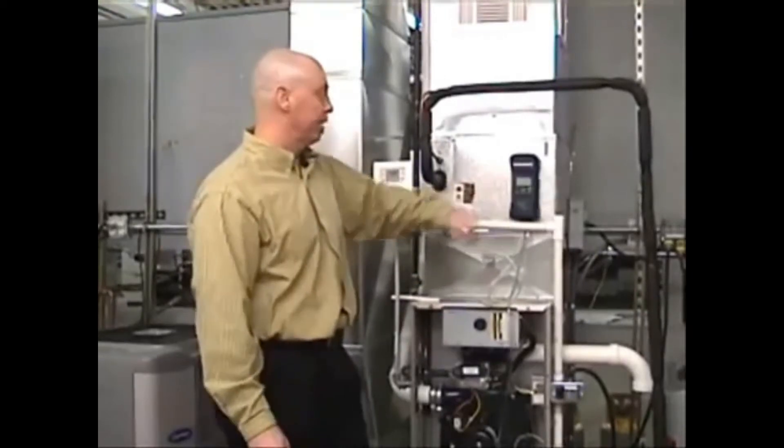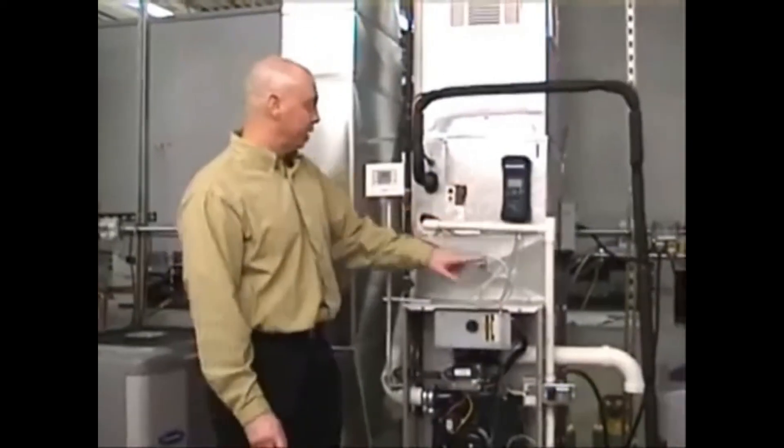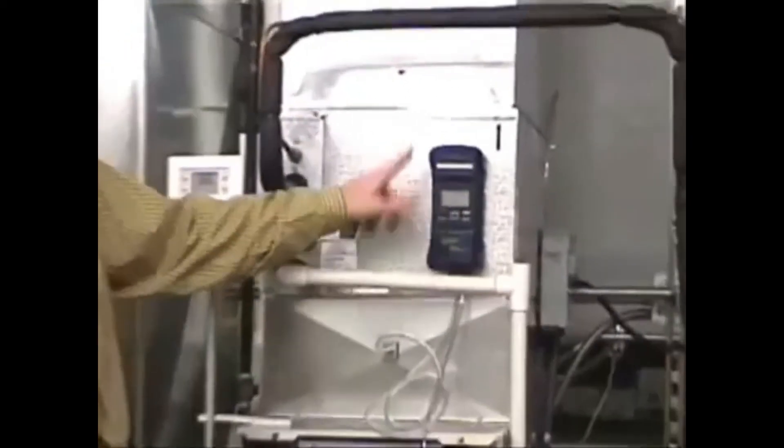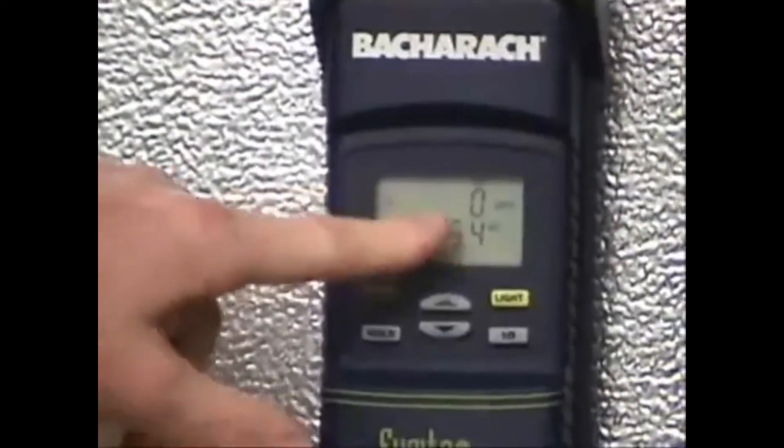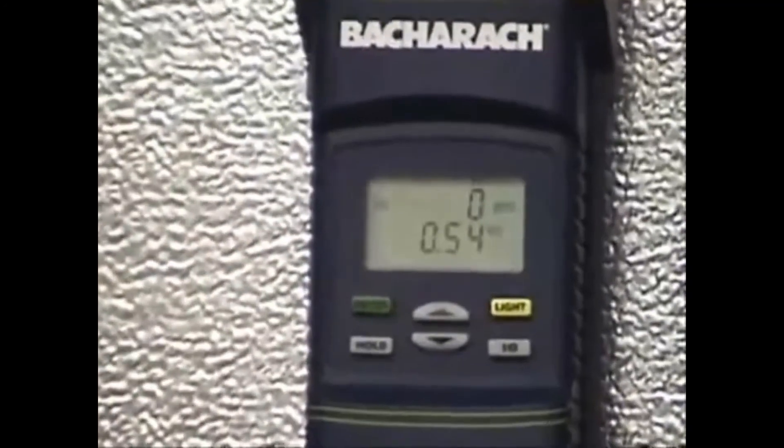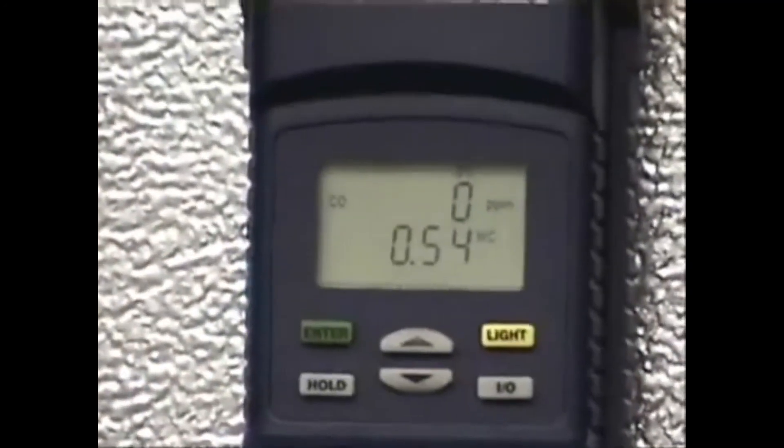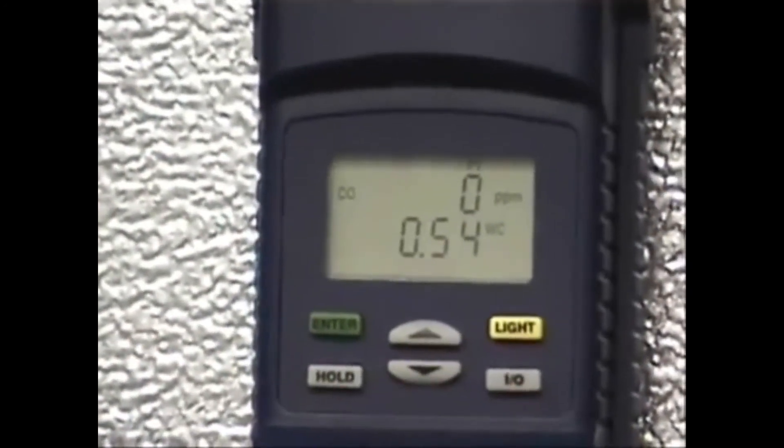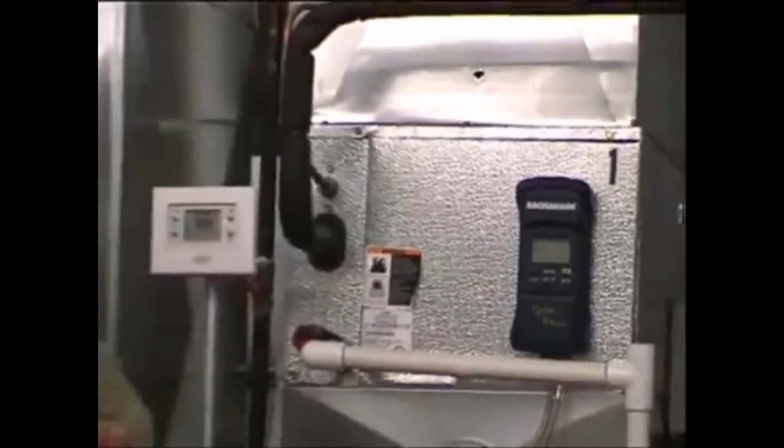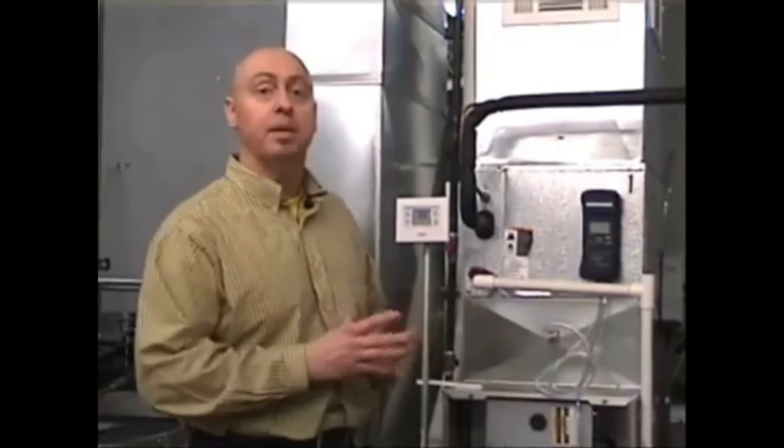In this particular case, the meter does that for me. So in this particular system, I am running right now a total static pressure, ESP, at 0.55 inches of water column, which is just above, slightly just above what our maximum allowable level is for this furnace. I am running continuous fan right now. On this particular piece of equipment, the continuous fan mode happens to be the low heating speed.